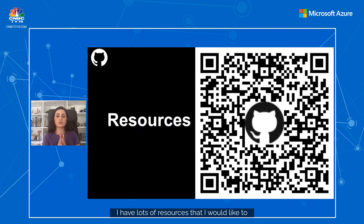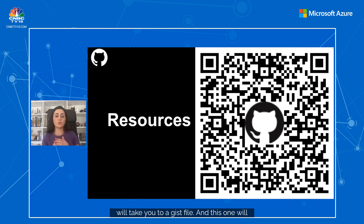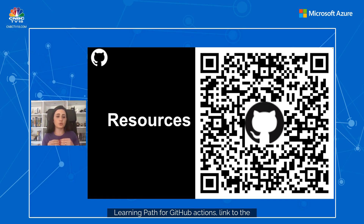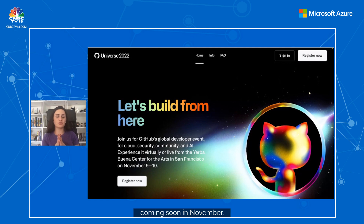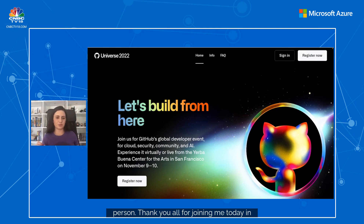I have lots of resources to share — there's a QR code that will take you to a gist file with a list of all the different links: our roadmap, the Microsoft Learning Path for GitHub Actions, larger runners, autoscaling runners, and all the different things I mentioned today. One more thing — GitHub Universe is coming soon in November, with lots more exciting features to be announced. Make sure you join virtually or in person. Thank you all for joining me today and learning more about GitHub Actions.